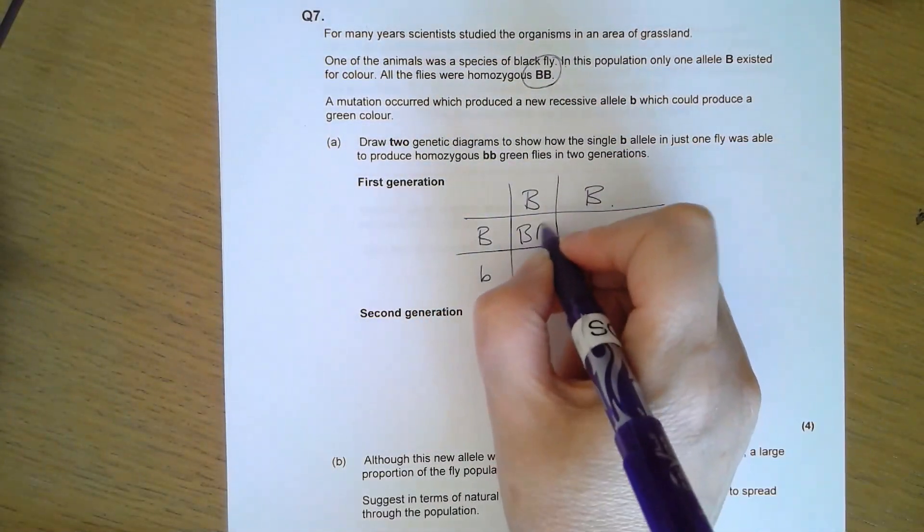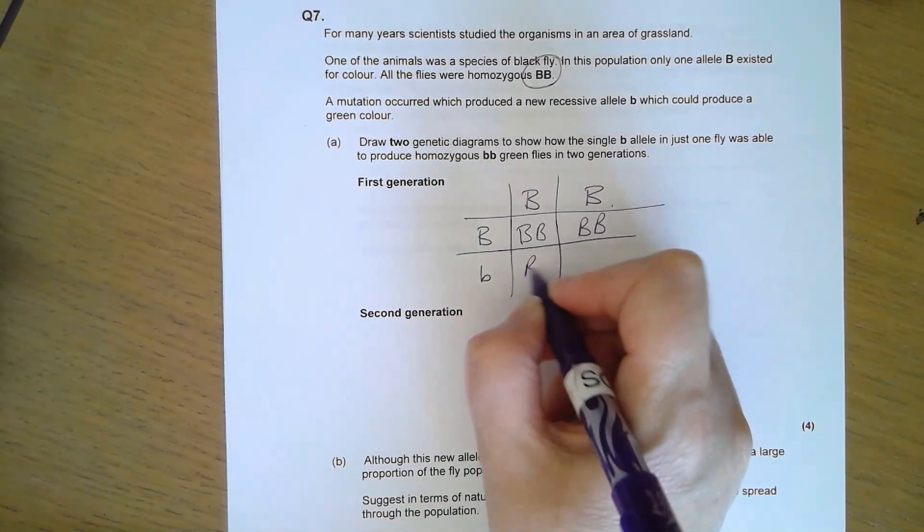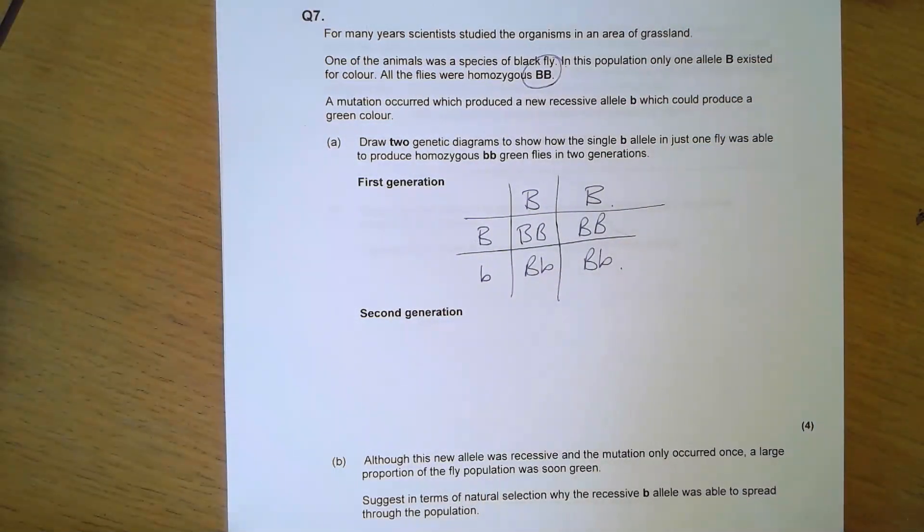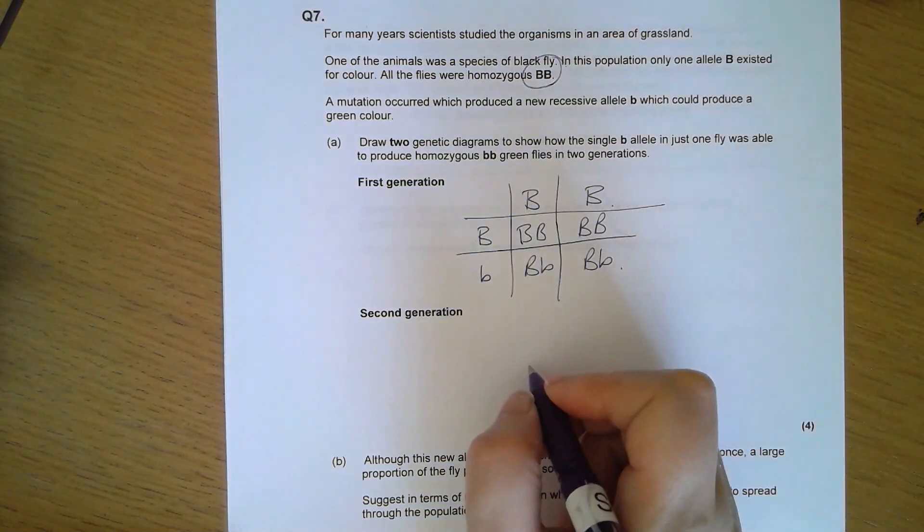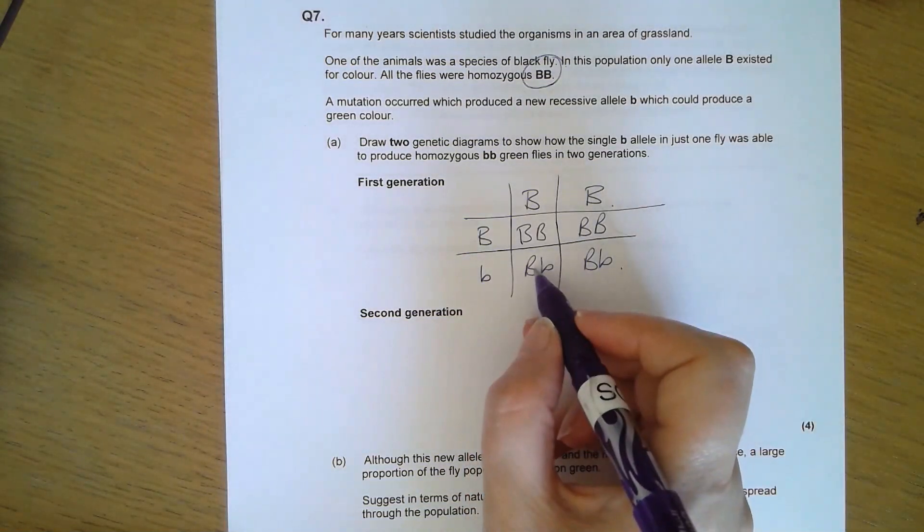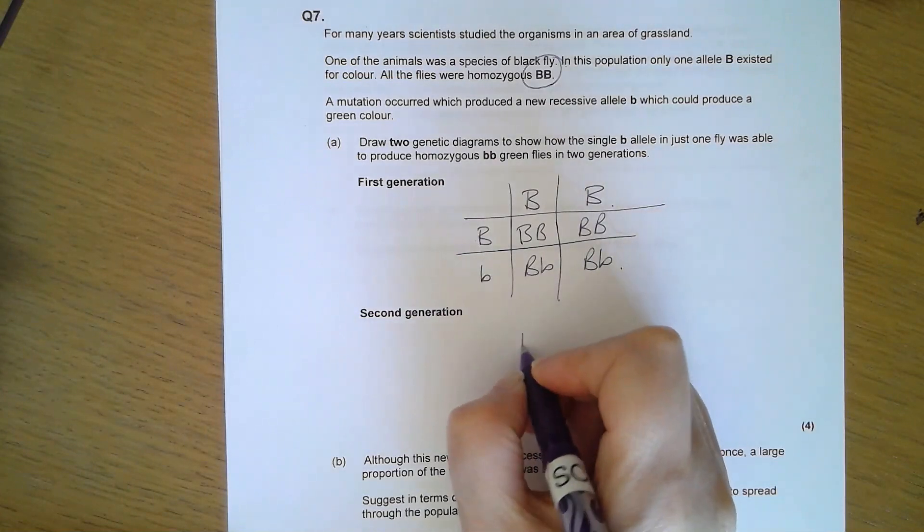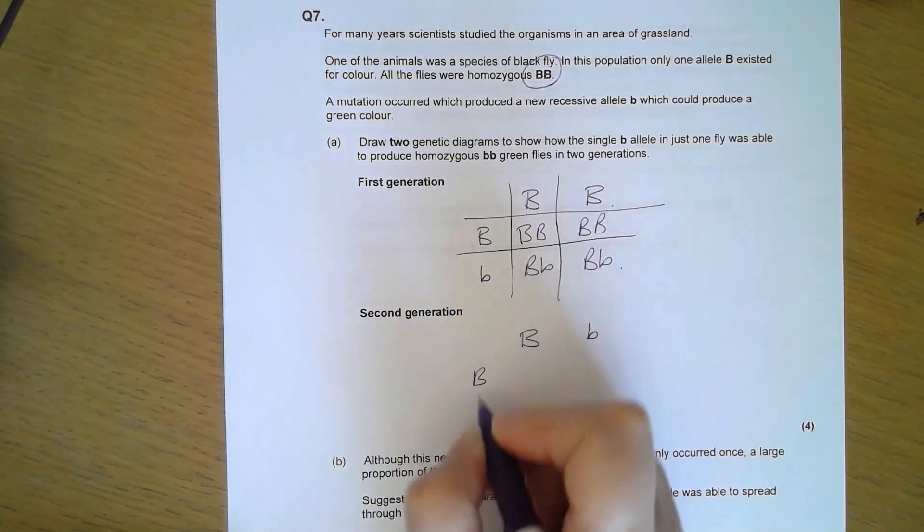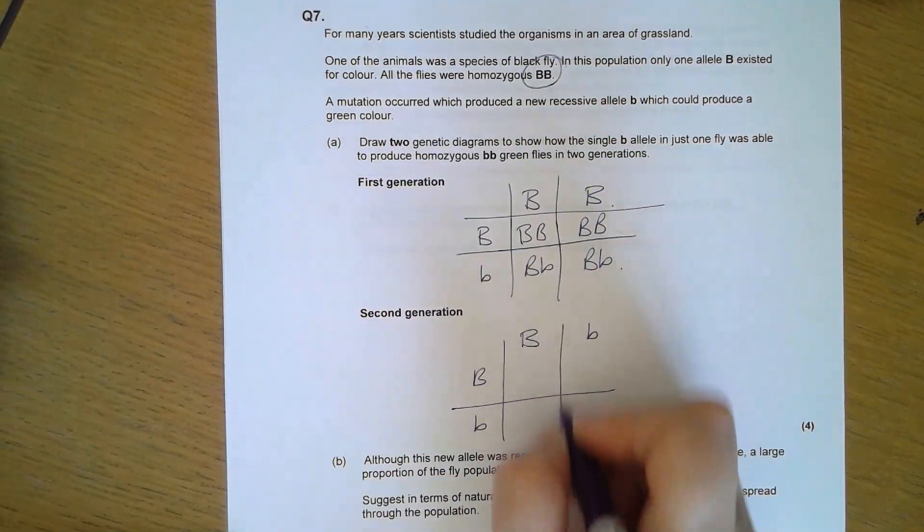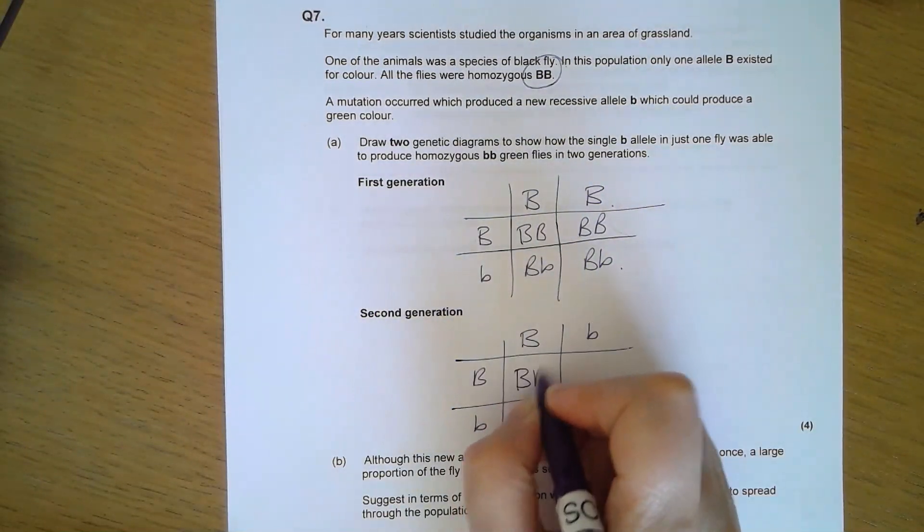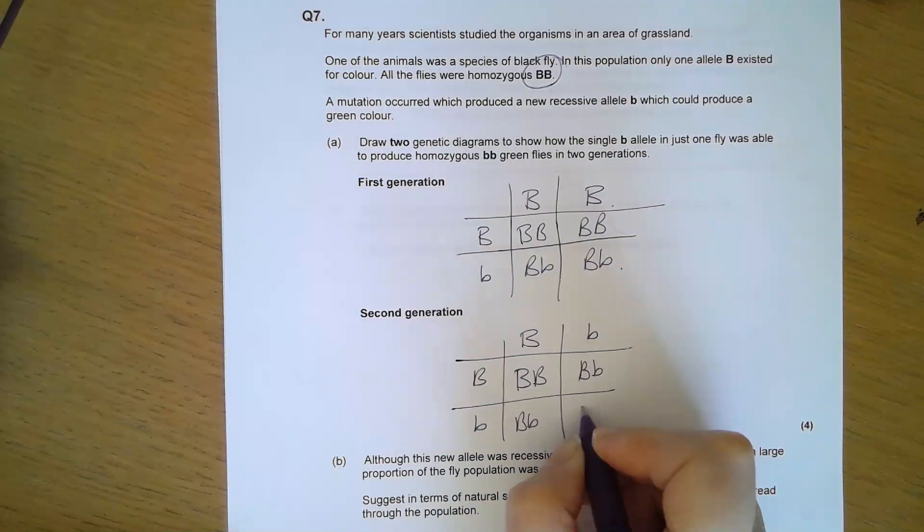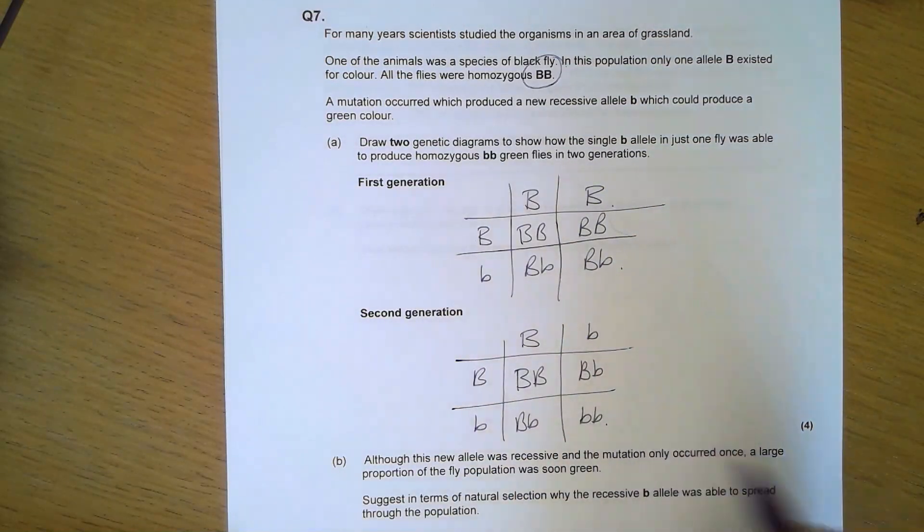My first generation, I've got a normal fly and one that has one mutation, so I have produced some heterozygous flies. You get two marks for that genetic cross. For the next genetic cross, I need to take the heterozygous flies and cross them to end up with a homozygous small b. Two marks for that one and two marks for that one.